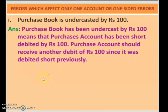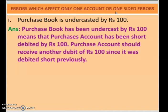Here is a very simple problem related to errors which affect only one account, or one-sided errors. One-sided error means we know that every transaction has two aspects — debit aspect and credit aspect. If, while recording, one of the aspects is not recorded — for example, the debit aspect was recorded but the credit aspect was not recorded by mistake — that is called a one-sided error.